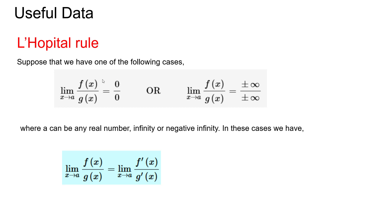Basically your f(a) and g(a) is zero, or it is tending to infinity by infinity form. Then you can apply this rule. According to this rule, this can be represented as f'(x) by g'(x). Dash here means differentiation.